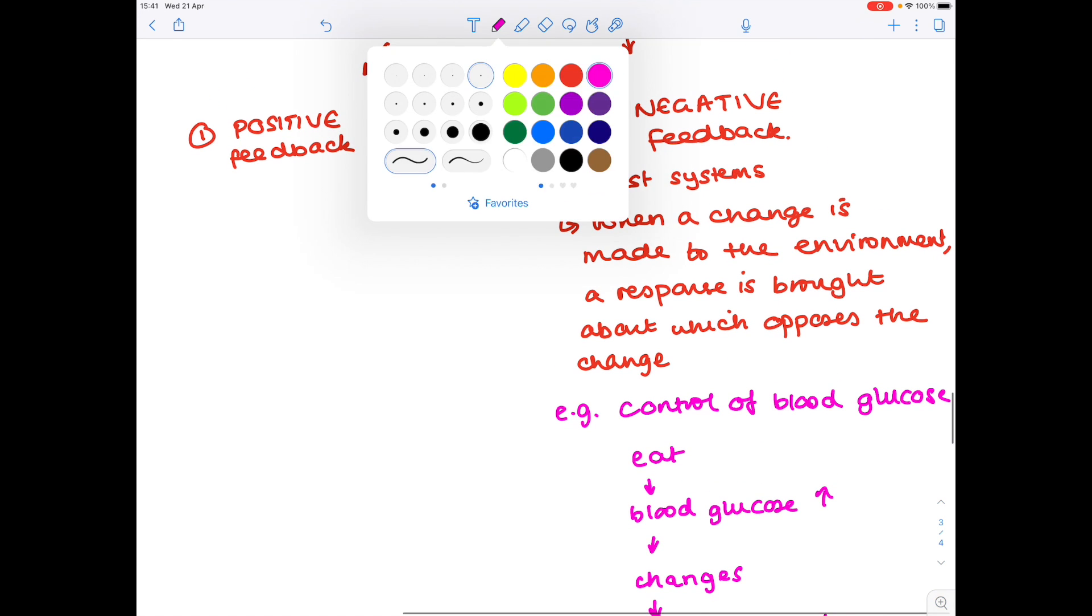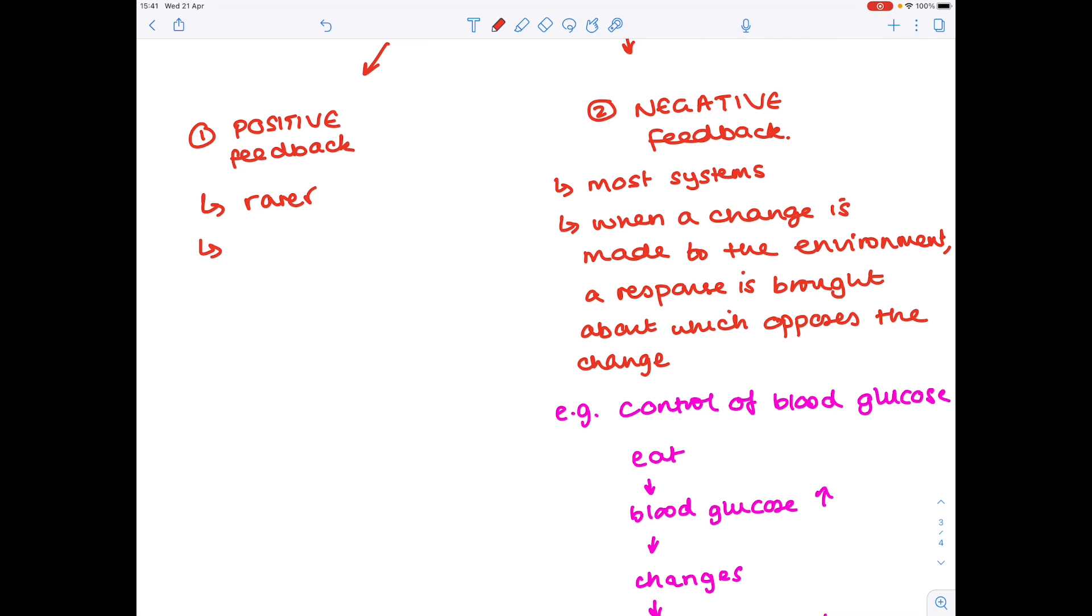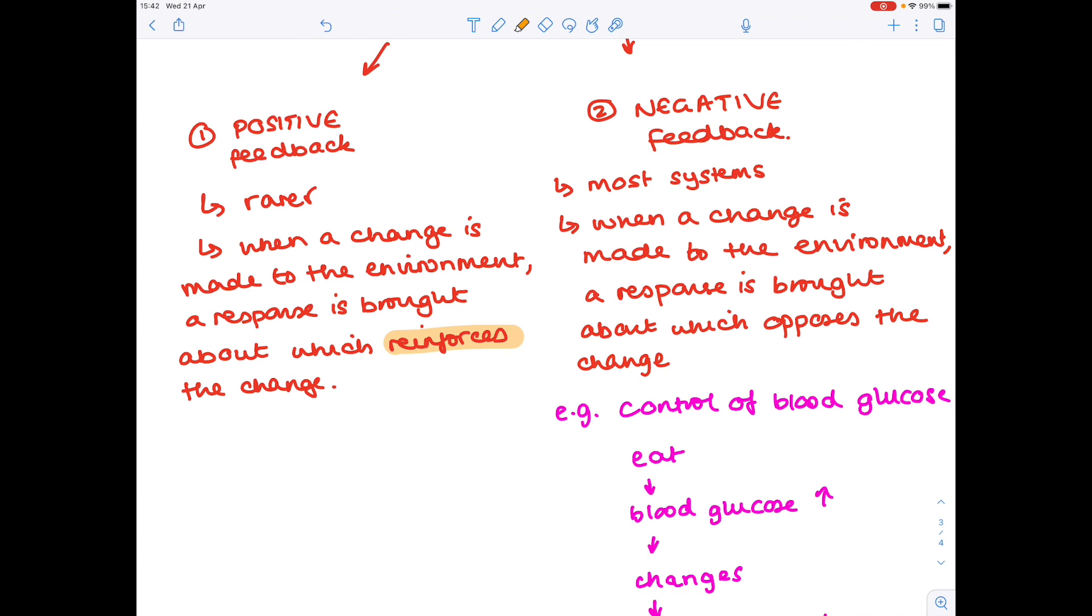Positive feedback is rarer. This is when a change is made by the environment and a response is brought about which reinforces that change. So notice we have a reinforcement of that change with positive feedback. And with negative feedback we see an opposition in the original change.